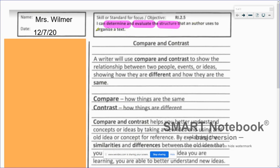And let's highlight organize a text. Just how did they decide to put together their writing? And one type of way that authors can organize writing is compare and contrast.